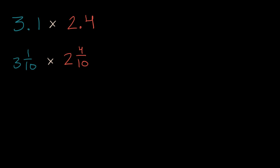So three is the same thing as 30-tenths. So 30-tenths plus one-tenth, this is thirty-one-tenths, times two is the same thing as 20-tenths. So 20-tenths plus four is 24-tenths. Twenty-four over ten.